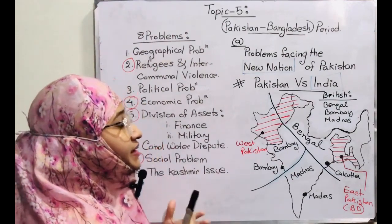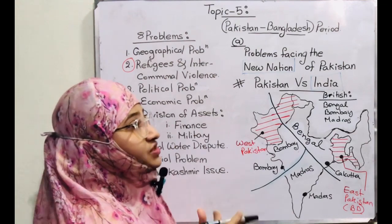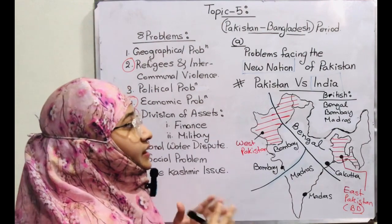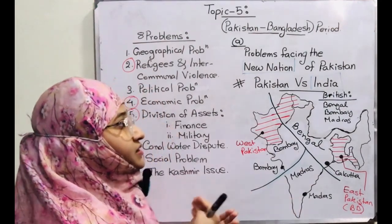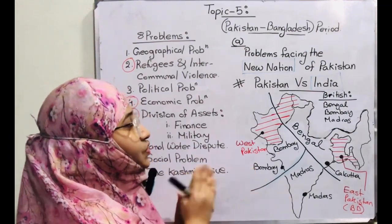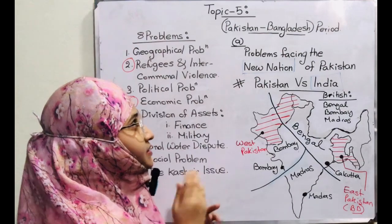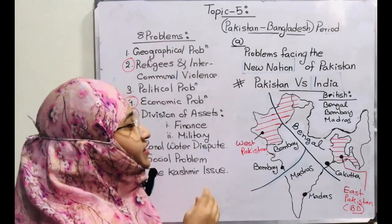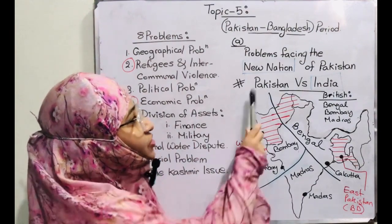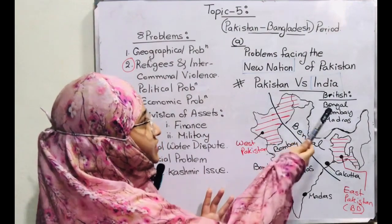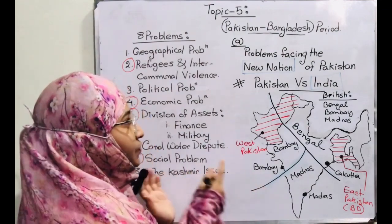This is a mini summary of Topic 5a - problems that Pakistan faced compared to India. This chapter covers problems Pakistan faced just after independence from British in 1947. The problems Pakistan faced were much more compared to India. Questions might come using the phrase 'new nation of Pakistan' or 'in comparison to India.' Be careful because this part is quite similar to 5b, and students often get confused. If you see 'new nation' or 'India' in the question, it's coming from Topic 5a.